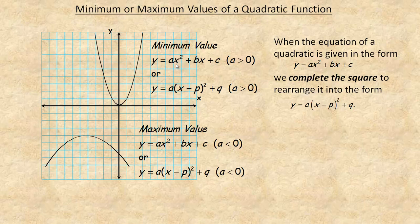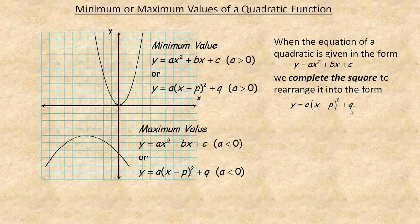Minimum values happen now in standard form — vertex form doesn't matter. It's really the a-value; by looking at the equation you can tell whether there's a min or max. If the a-value, the stretch factor, is a positive value, it opens up and there's a minimum value. If the a-value is less than zero, then it opens down and there's a highest point. When the equation is given in standard form, we can complete the square to rearrange it into vertex form so we can tell where the vertex is.